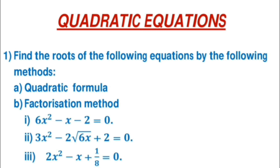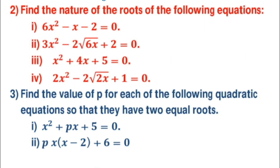For the questions on quadratic equations, in question 1 find the solutions using both the quadratic formula and the factorization method. In question 2, find the nature of the roots by first calculating the discriminant: b² − 4ac, where a is the coefficient of x², b is the coefficient of x, and c is the constant term. If the discriminant is 0, equal roots; if greater than 0, two real unequal roots; if negative, imaginary roots.